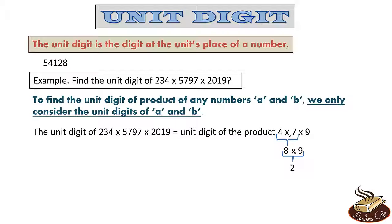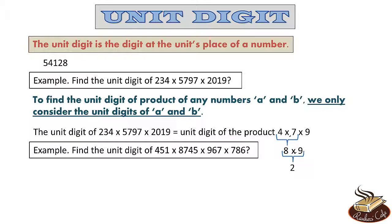Similarly, to find the unit digit of 451 × 8745 × 967 × 786, we consider only the unit digits: 1, 5, 7, and 6. 1 × 5 = 5. 5 × 7 = 35, giving unit digit 5. Then 5 × 6 = 30, giving a unit digit of 0.